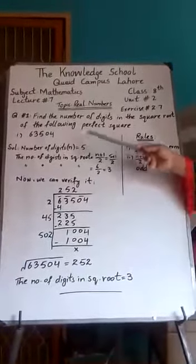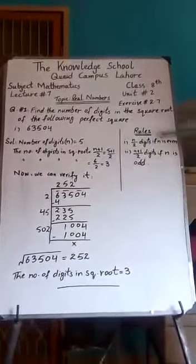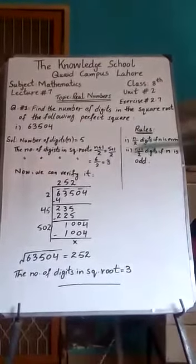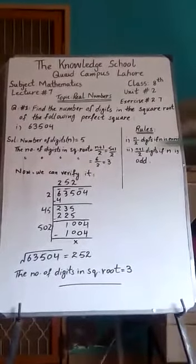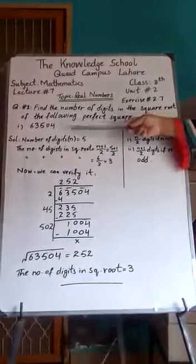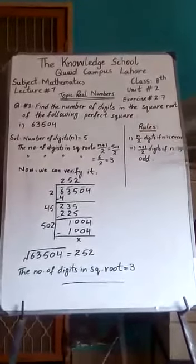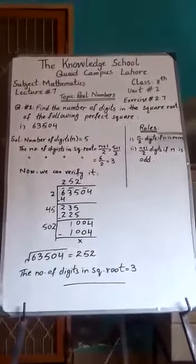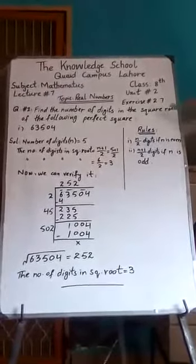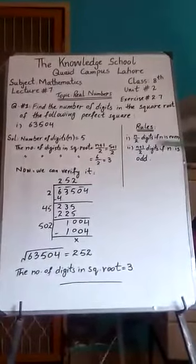Students, is ko solve karne ke two methods, two rules hote hain. First rule hai number of digits divided by 2 if number of digits n is even. Agar yeh count kare, or yeh even numbers meh hamari paas koay number a raha n, to ham usse two-part simply divide karke, jab square root find karenge, to utne hi digits answer meh ayenge.